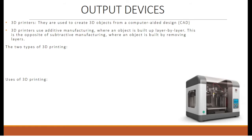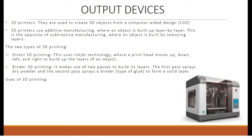3D printers are used to create 3D objects from a computer-aided design and are a quite recent piece of technology. 3D printers use additive manufacturing, where an object is built up layer by layer — the opposite of subtractive manufacturing, where an object is built by removing layers. The two types of 3D printing are: direct 3D printing, which uses inkjet technology where a print head moves up, down, left, and right to build up the layers of an object; and binder 3D printing, which makes use of two passes — the first pass sprays dry powder and the second pass sprays a binder, or type of glue, to form a solid layer.